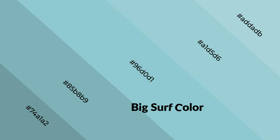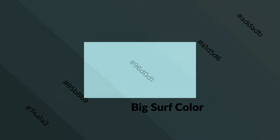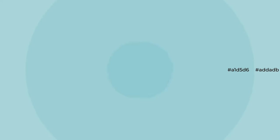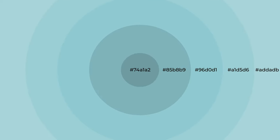Cool colors are like water, ice, sky, grass, soft, and snow. You can see them used in baby products.